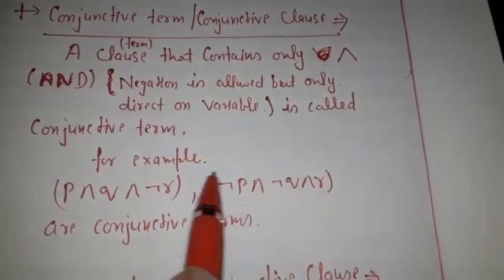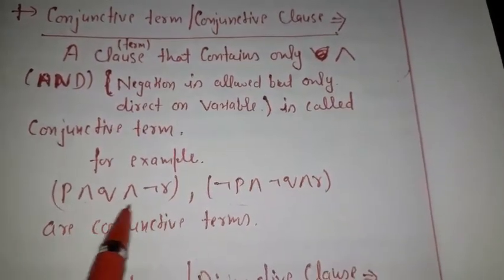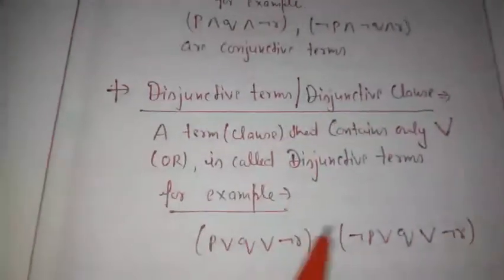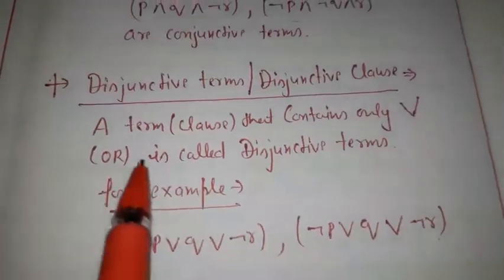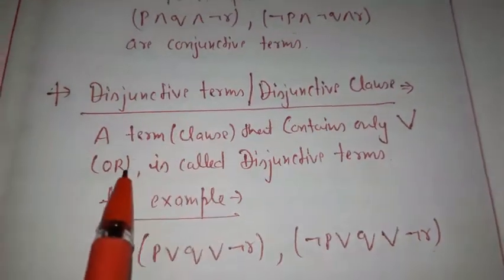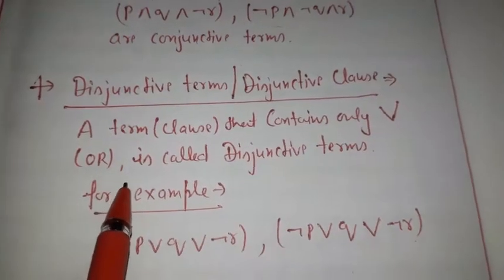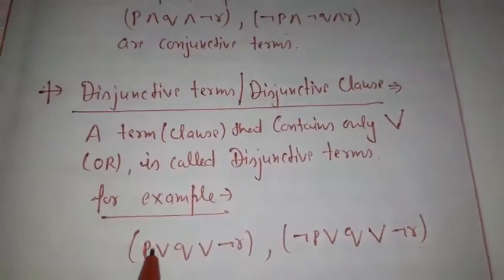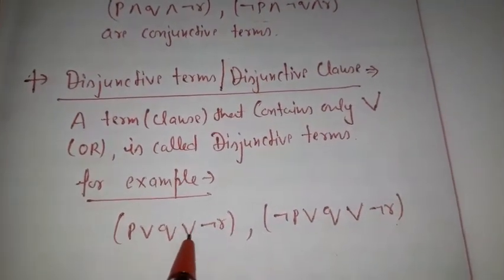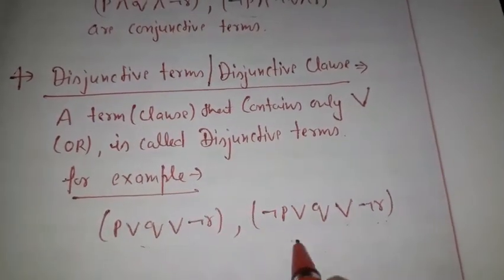Similarly, the other term in the propositional logic statement is the disjunctive term. Disjunctive terms are terms which contain only the disjunction, that is the OR operation. For example, p∨q∨¬r, ¬p∨q∨¬r — these are the disjunctive terms.